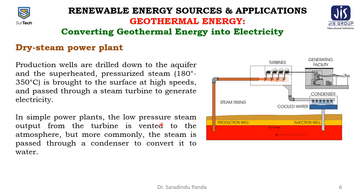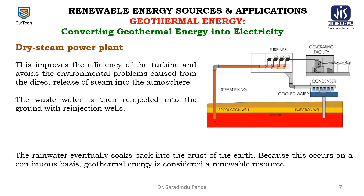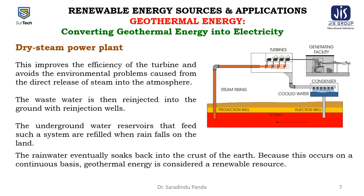In simple power plants, the low-pressure steam output from the turbine is vented to the atmosphere, but more commonly the steam is passed through a condenser to convert it to water. This improves turbine efficiency and avoids environmental problems caused by the direct release of steam into the atmosphere. The condensed water is then re-injected into the ground via an injection well. The underground water reservoirs feeding such a system are refilled when rain falls and soaks back into the earth's crust, which is why geothermal energy is considered a renewable resource.